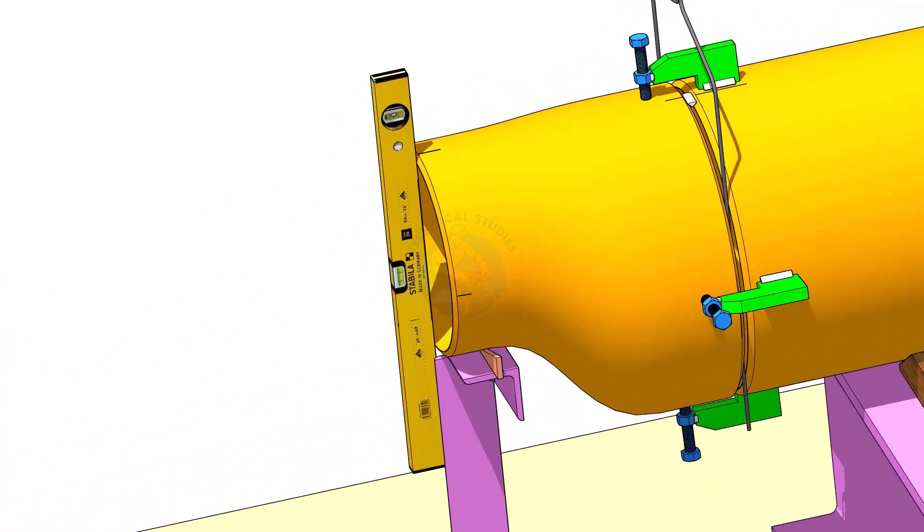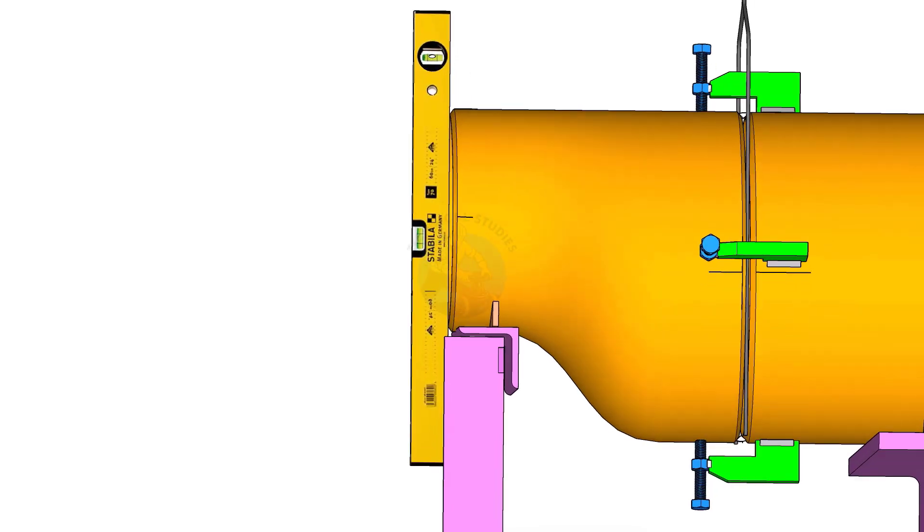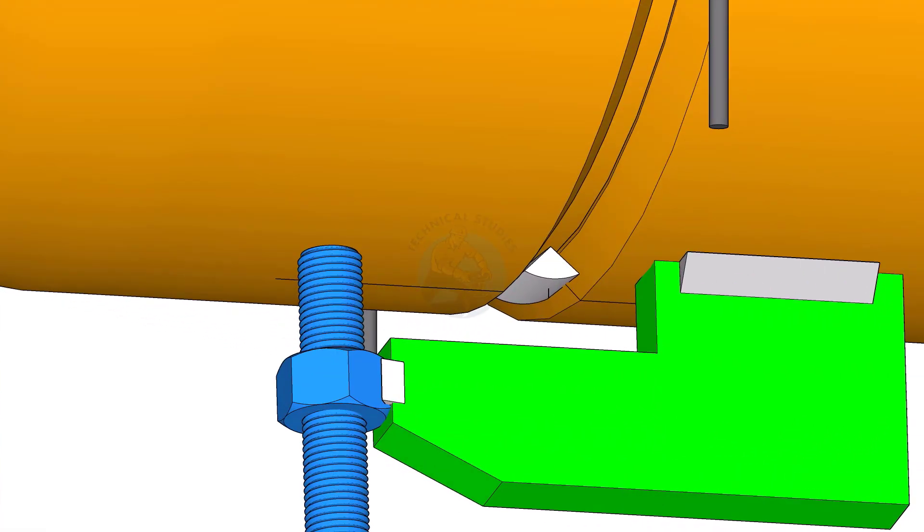Correct the levelness of the outer face of the reducer. Tack weld on the bottom side of the joint.